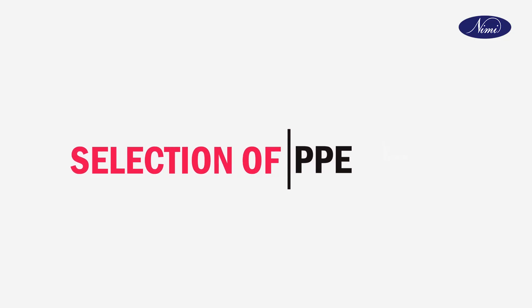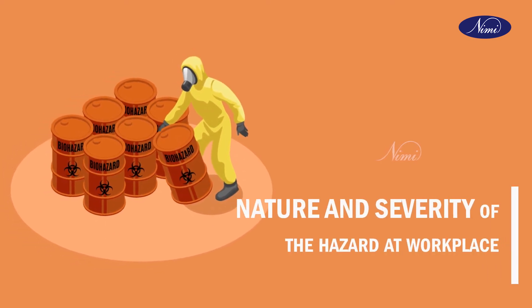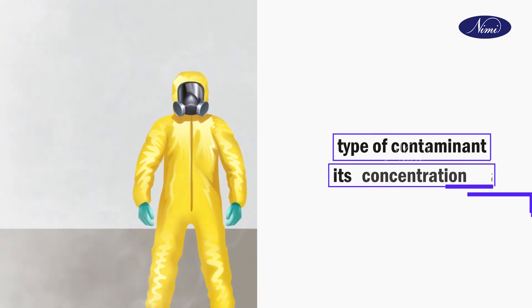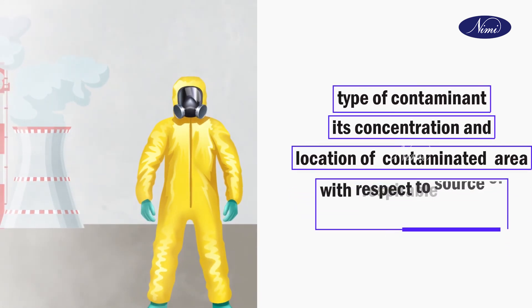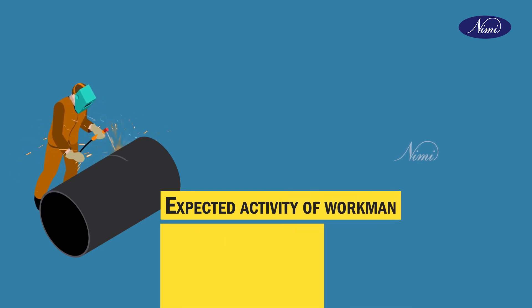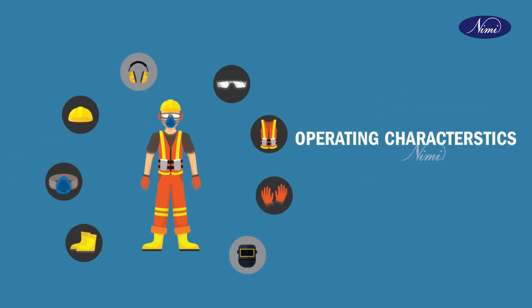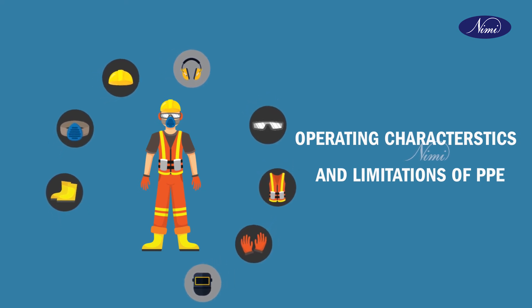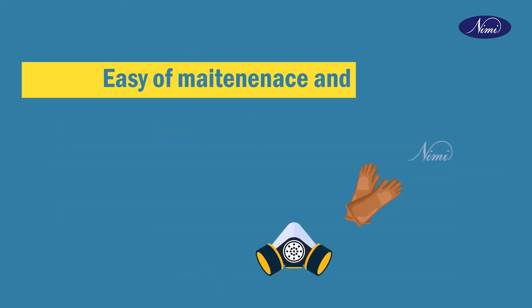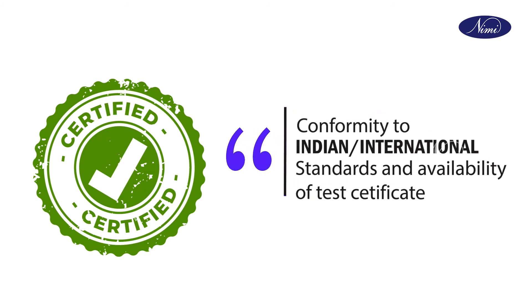The selection of PPE depends upon the nature and severity of the hazards at workplaces, the type of contaminant, its concentration, and the location of the contaminated area with respect to the source of respirable air. It also depends upon the expected activity and duration of work, comfort of workmen when using the PPE, operating characteristics and limitations of PPE, ease of maintenance and cleaning, and conformity to Indian or international standards and availability of test certificates.